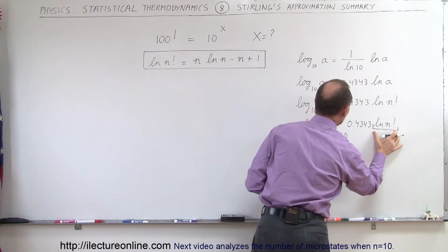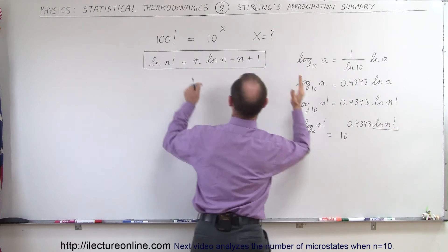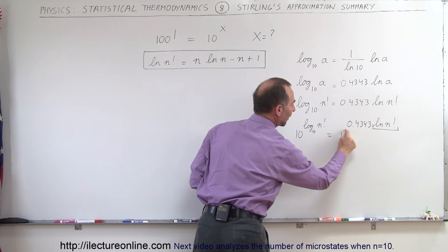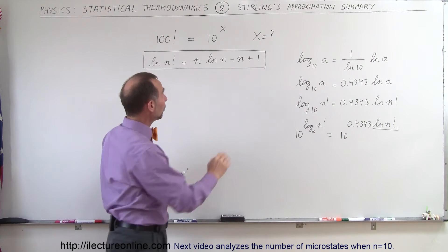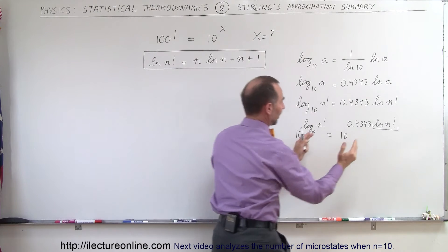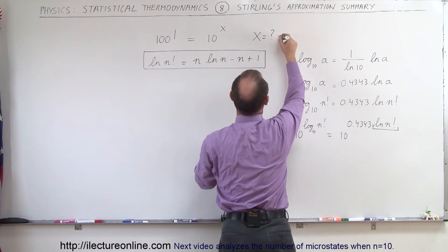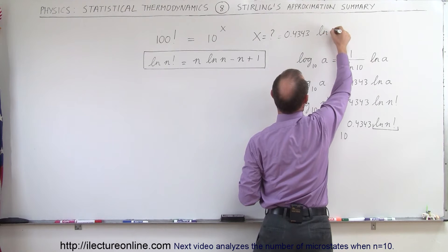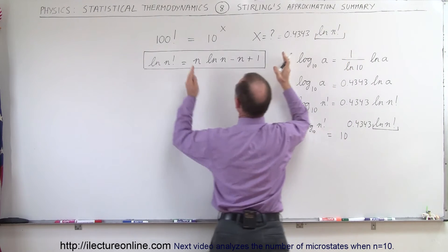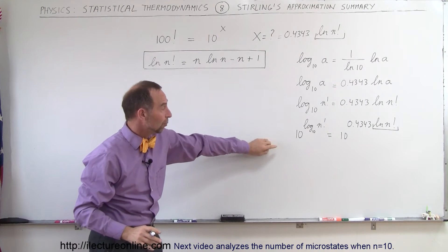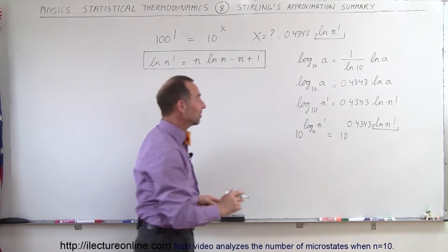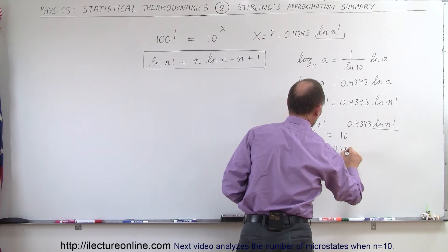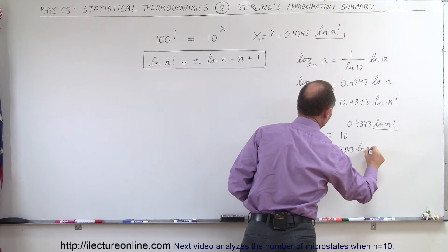Remember, the natural log of n factorial is Stirling's approximation — it gets replaced by n times the natural log of n, minus n, plus 1. We multiply it times 0.4343, and that becomes the exponent of 10, which will be the exponent x. So x is equal to 0.4343 times the natural log of n factorial. The left side of the equation, when we raise 10 to the log base 10, that negates itself. And we can then say that n factorial equals 10 raised to 0.4343 times the natural log of n factorial.